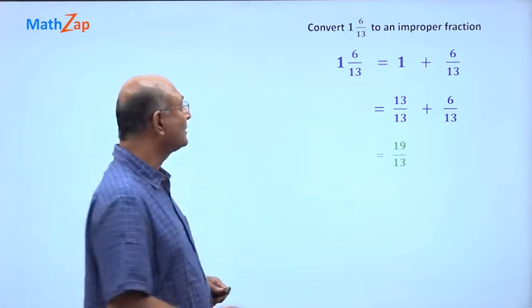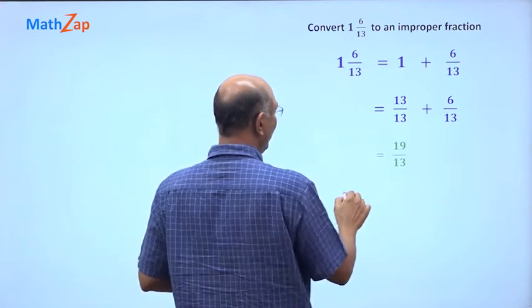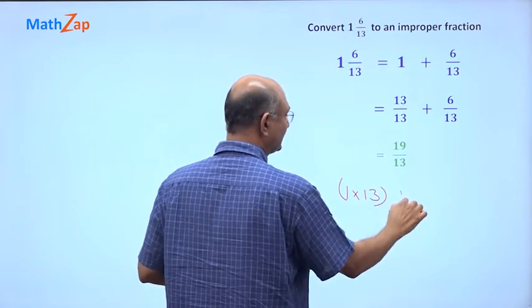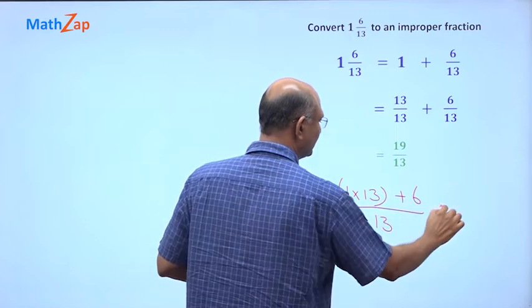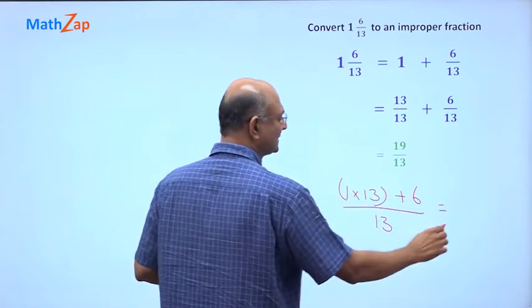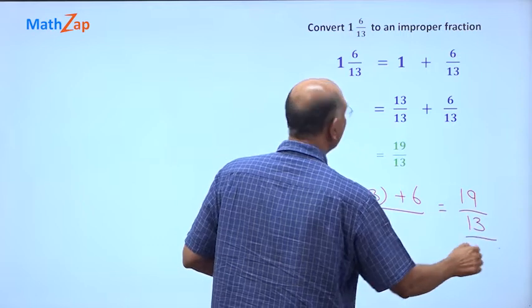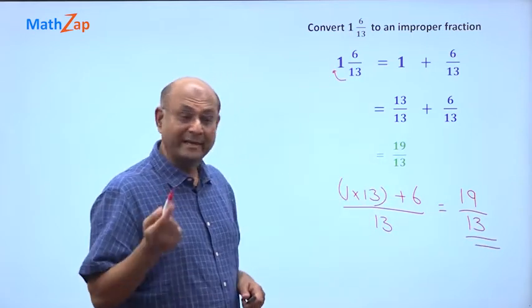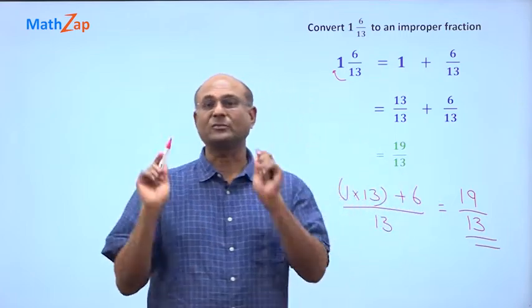But we could have also done it directly by saying 13 into 1, 1 into 13 plus 6 by 13, which is 13 plus 6, which is 19 by 13. Because you just have to multiply these two, 13 plus 6, 19 divided by 13. And so that is the answer to this question.